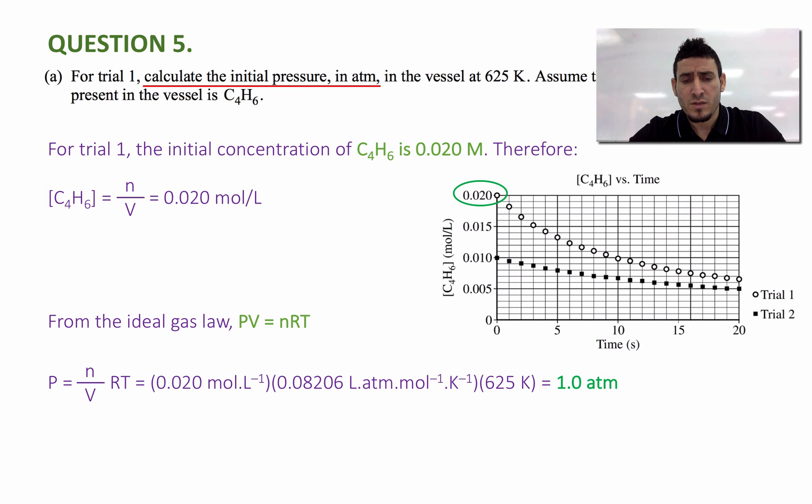Multiplied by the Kelvin temperature which is 625 Kelvin. So the answer comes up to 1.0 atmosphere.